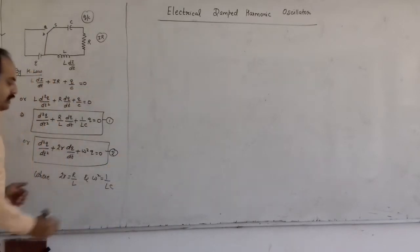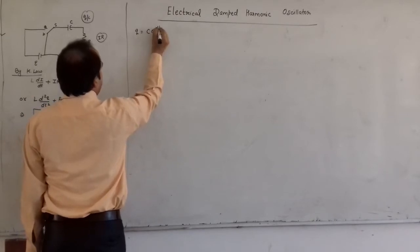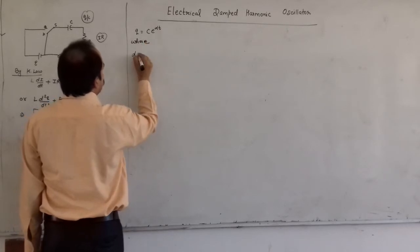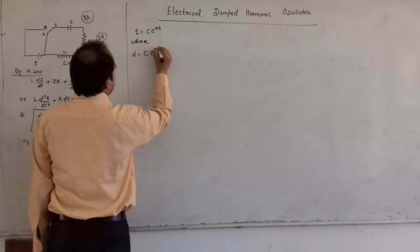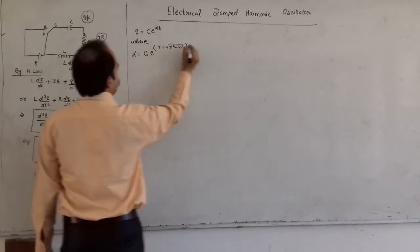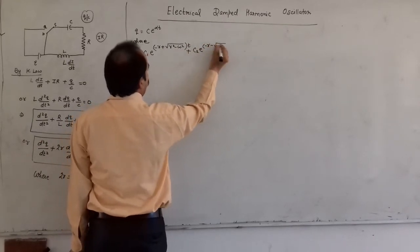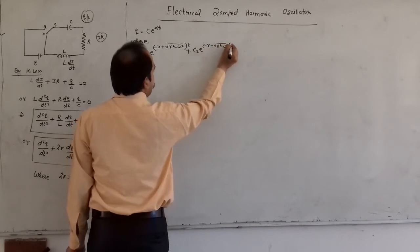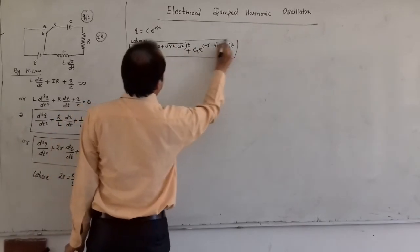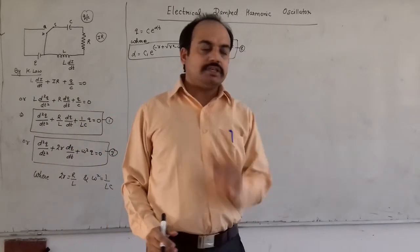The general solution of equation number 2 can be written as Q = C·e^(αt). On solving, we get the solution: Q = C₁·e^((-β + √(β²−ω²))t) + C₂·e^((-β − √(β²−ω²))t). For the derivation of this equation you can refer to my previous lecture on the mechanical damped harmonic oscillator.